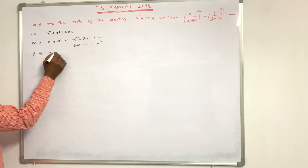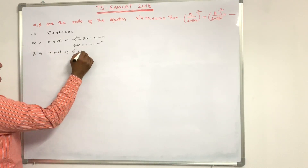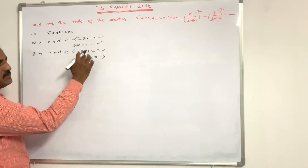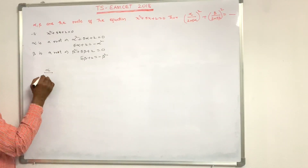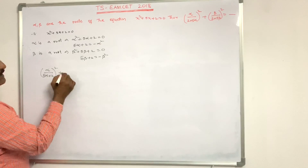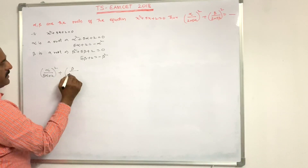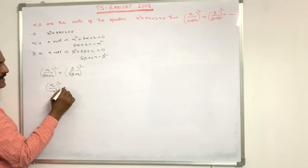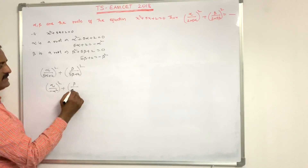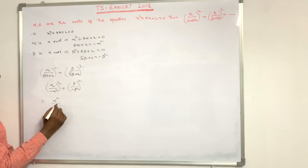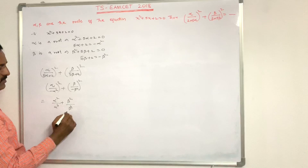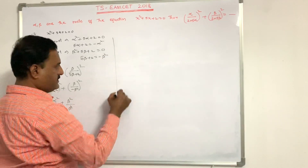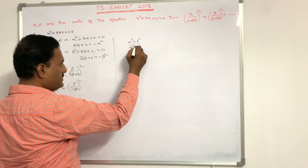Substituting these values: α/(5α + 2)² + β/(5β + 2)² = α/(-α²)² + β/(-β²)² = α/α⁴ + β/β⁴ = 1/α³ + 1/β³. Wait, simplifying: α/α⁴ = 1/α² and β/β⁴ = 1/β² (since α² cancels). So the expression equals 1/α² + 1/β² = (α² + β²)/(α²β²).